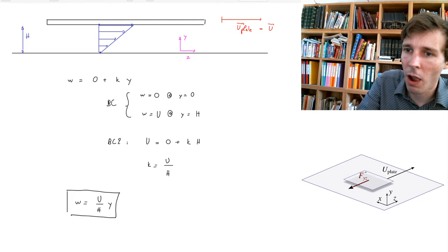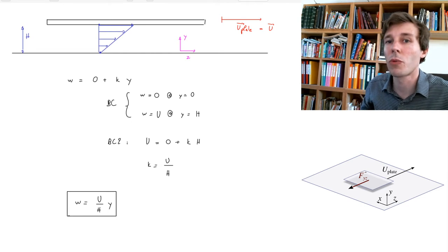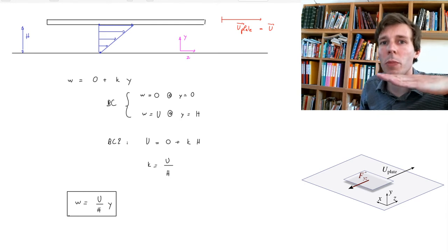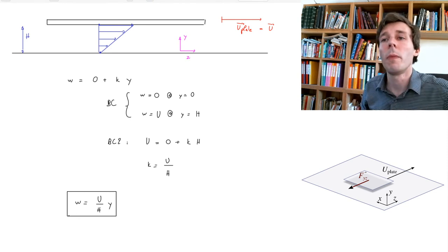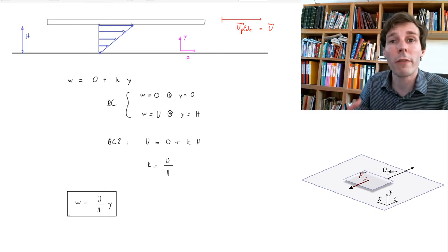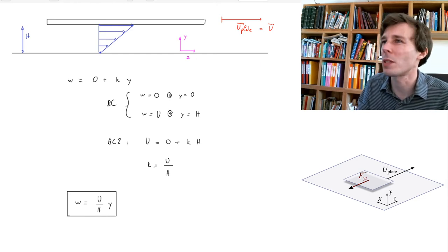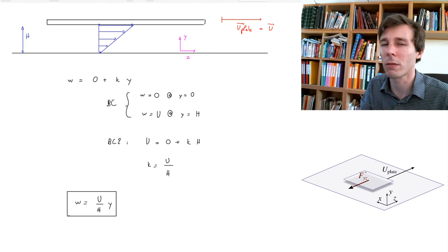Let me insist that this is a guesstimate — we do not prove this, we have an intuition for it. If the plate were tilted, wavy, or moving at high velocity, we could not guesstimate the velocity distribution and would have to solve for it. In anything but the simplest cases, there is no analytical solution by hand — we have to compute it with computers.